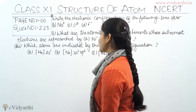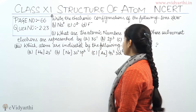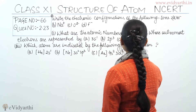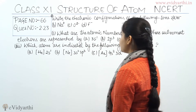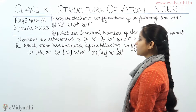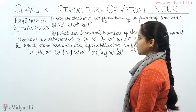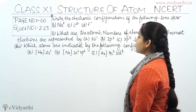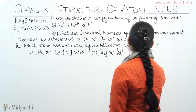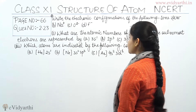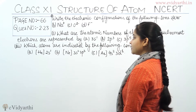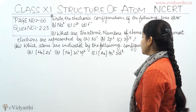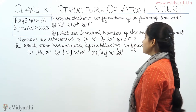The first part of this question is: write the electronic configuration of the following ions — A) H negative, B) Na positive, C) O2 negative, D) F negative. The second part asks: what are the atomic numbers of elements whose outermost electrons are represented by A) 3s1, B) 2p3, C) 3p5.